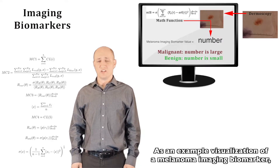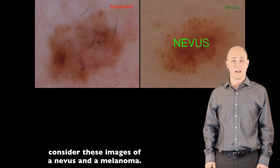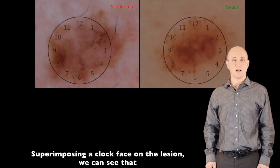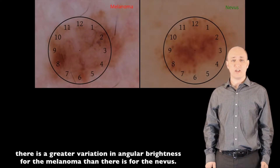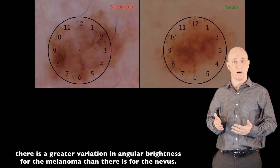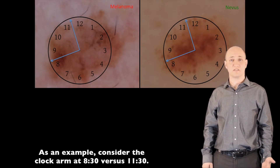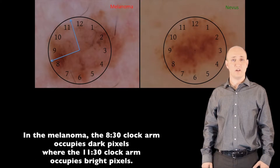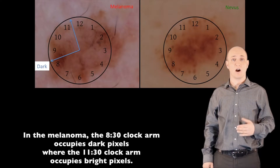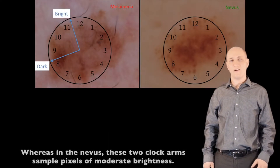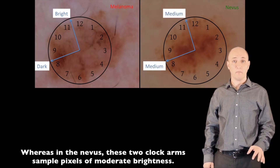As an example visualization of a melanoma imaging biomarker, consider these images of a nevus and a melanoma. Superimposing a clock face on the lesion, we can see that there is a greater variation in angular brightness for the melanoma than for the nevus. As an example, consider the clock arm at 8:30 versus 11:30. In the melanoma, the 8:30 clock arm occupies dark pixels.